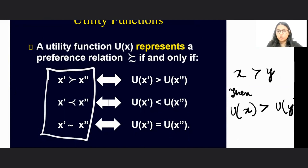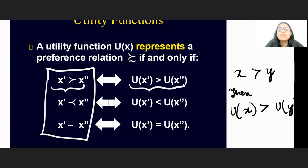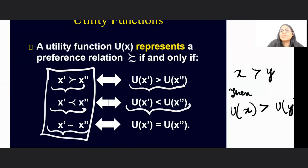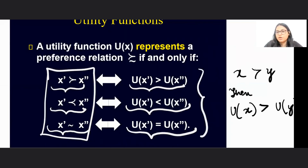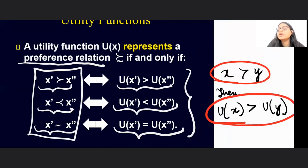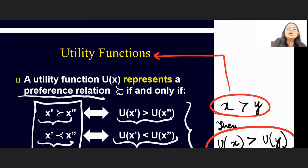So ideally, we form utility functions such that if X is preferred over Y, then the utility from X is greater than the utility from Y. If X is less preferred than some other bundle, then utility from X is also less. If I am indifferent between two bundles, then the utility from both bundles is the same. Any function that represents your preference relation — meaning any function where X preferred over Y implies U(X) > U(Y) — is known as a utility function.